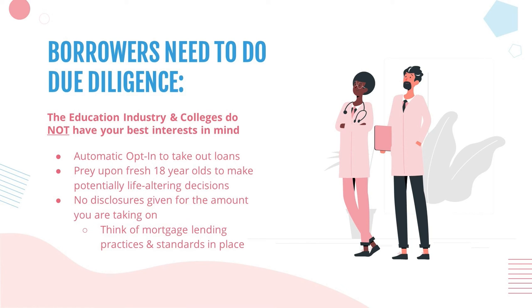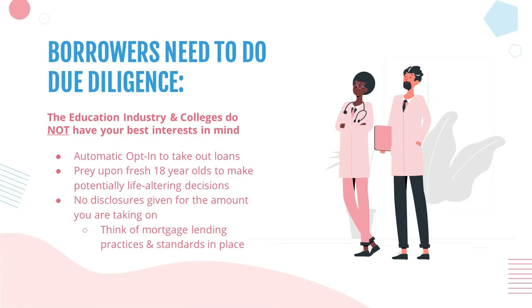In needing to do your due diligence, believe it or not, colleges do not have your best interests in mind. I had a story of a parent whose kid was going through the application portal and had to automatically opt out of a $2,500 unsubsidized federal loan for each semester. You're telling an 18-year-old kid to read the fine print and opt out of a $2,500 per semester student loan — just insane. There are no disclosures given for the amount students are taking on. Think of the mortgage lending standards that exist — there are far better practices in place there. Being aware and making your kids aware is very important.